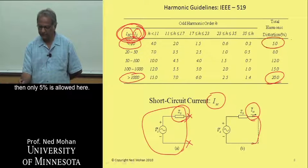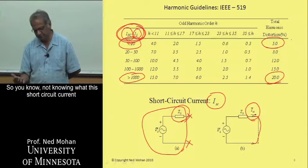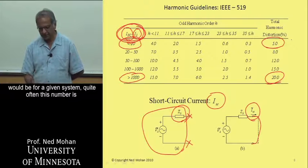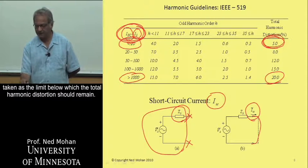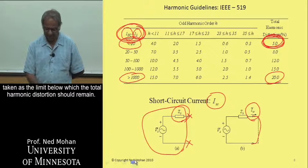Whereas when this ratio is slightly over 20, or less than 20, then actually less than 20 here, then only 5% is allowed here.